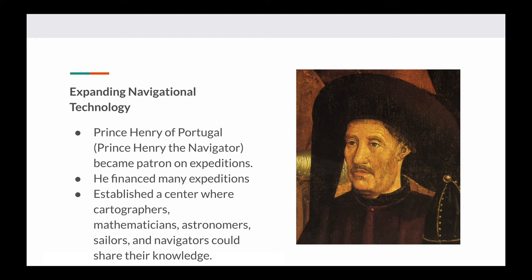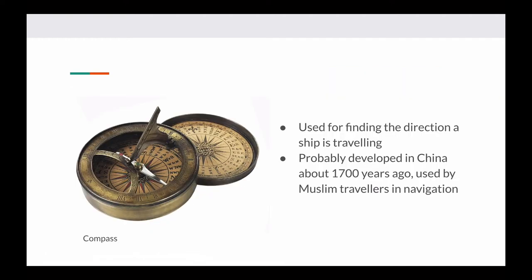So what tools were available to people back then? The compass was used for finding the direction a ship is traveling in — your phones have them built in. It's believed the compass was developed in China about 1,700 years ago. It wasn't the Europeans who first used it, but the Muslim travelers who were first to use the compass.